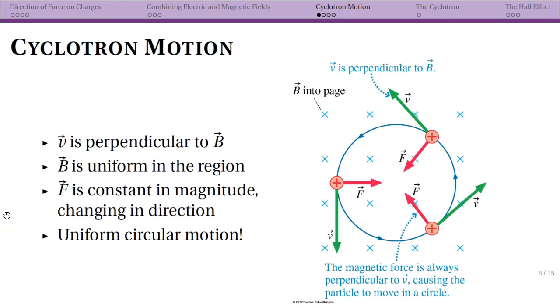Cyclotron motion is a fancy, unfamiliar word that simply means making particles go in circles in a magnetic field. Tron suggests something futuristic like magnetic fields, and cyclo looks like circle. So just remember that's all we're talking about: charged particles going in circles due to magnetic fields.